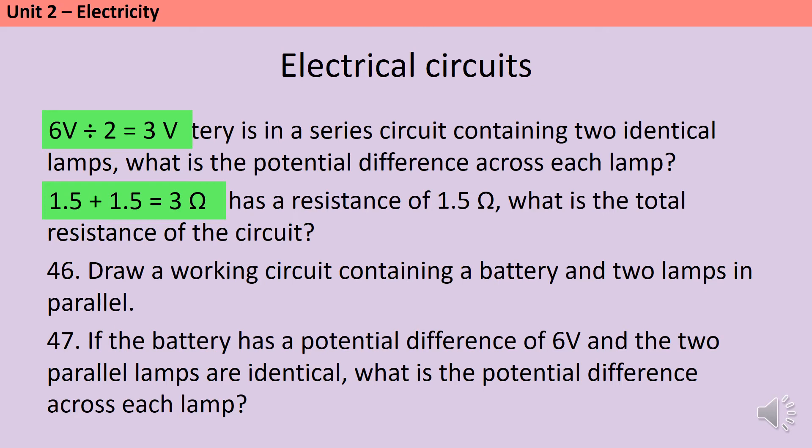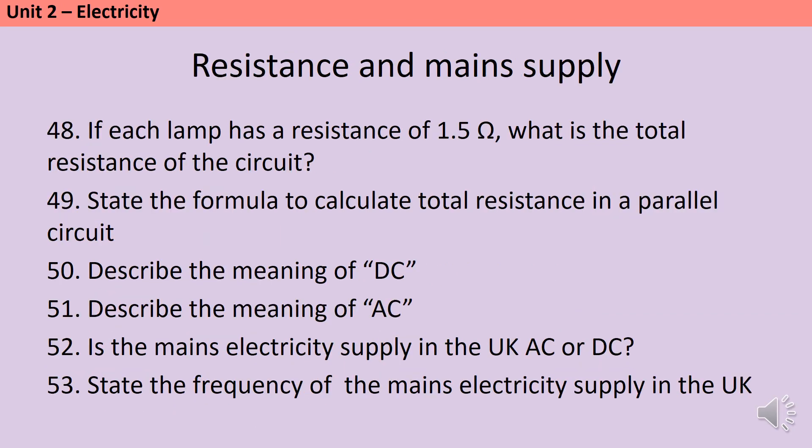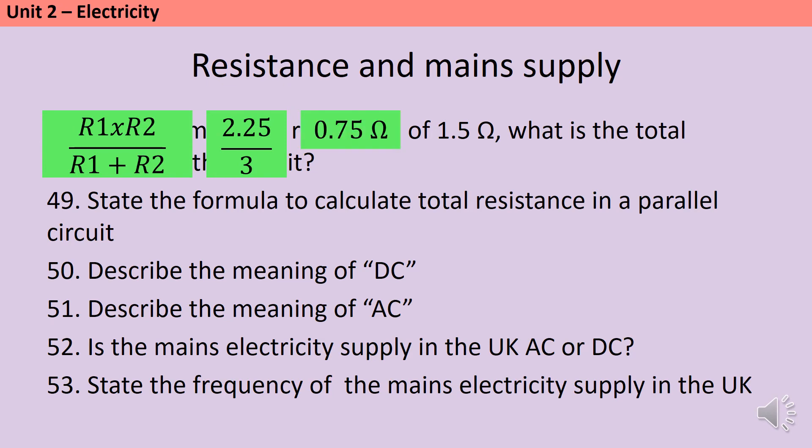If we have a parallel circuit with two lamps in parallel, it would look like this. If the battery has a potential difference of six volts, well, each lamp receives six volts because each one of the branches gets the full potential difference. To measure the resistance in a parallel circuit, we multiply the product of the branches by the sum of the branches. So R1 times R2 divided by R1 plus R2, which in this instance is 2.25 divided by 3, which is 0.75 ohms. The overall resistance of a parallel circuit will be less than the resistance of either one of the branches. The formula to calculate this is R1 times R2 divided by R1 plus R2.